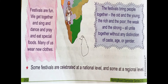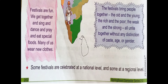Festivals bring people together — the old and the young, the rich and the poor, the weak and the strong — all unite together without any distinction of caste, age, or gender. People visit each other's homes to offer kumkuma and exchange tambula. This is something special about our country.